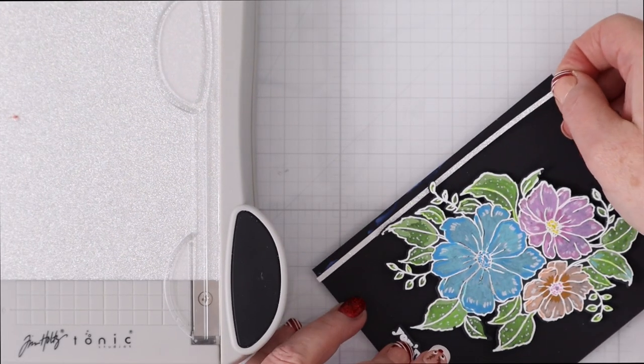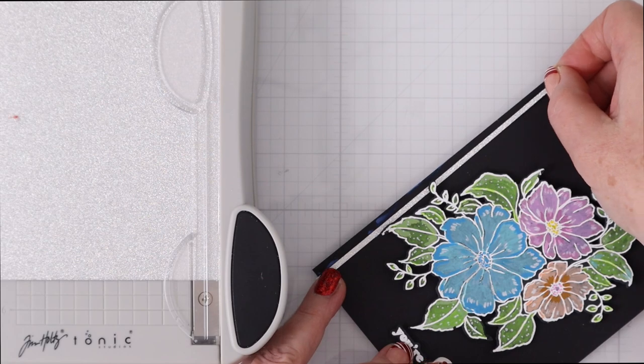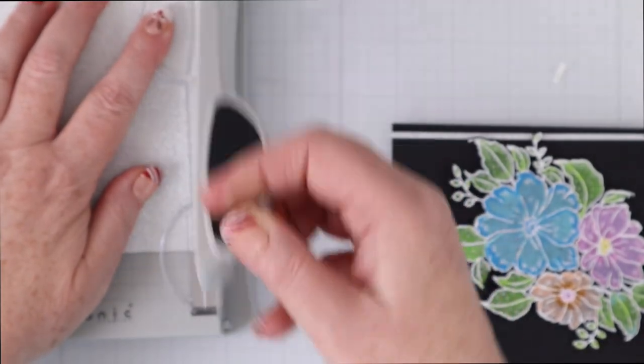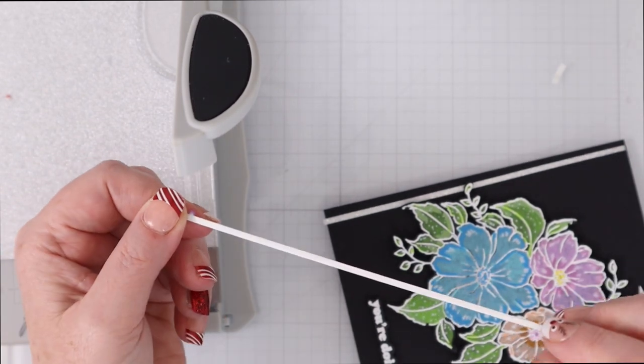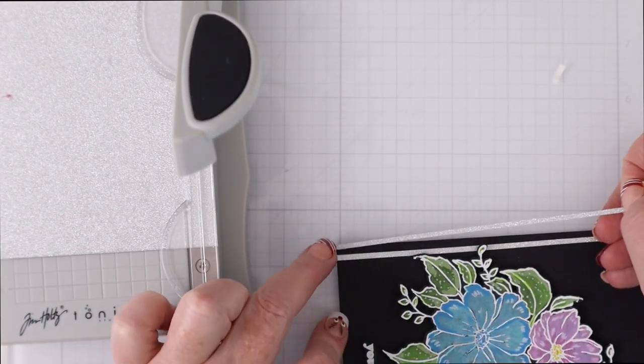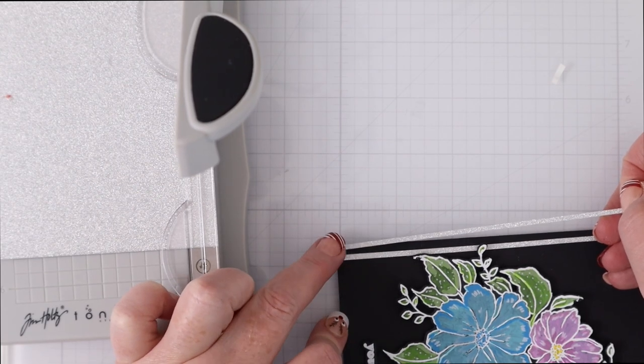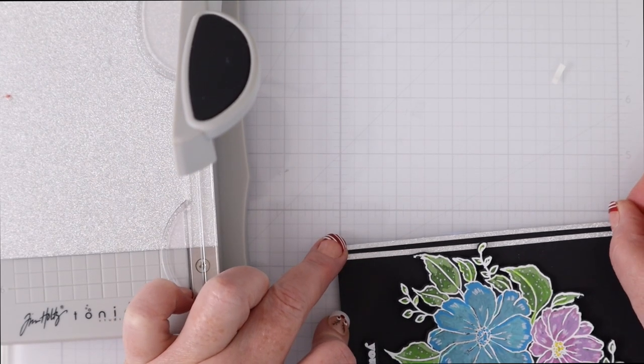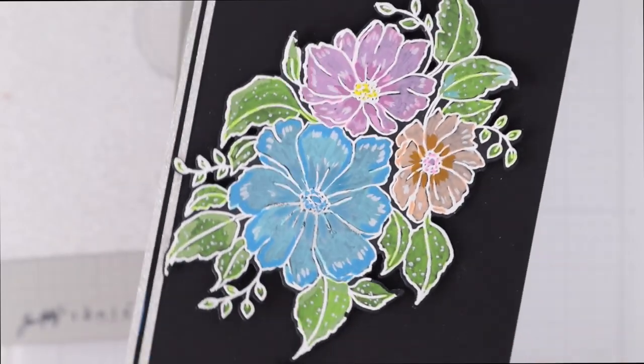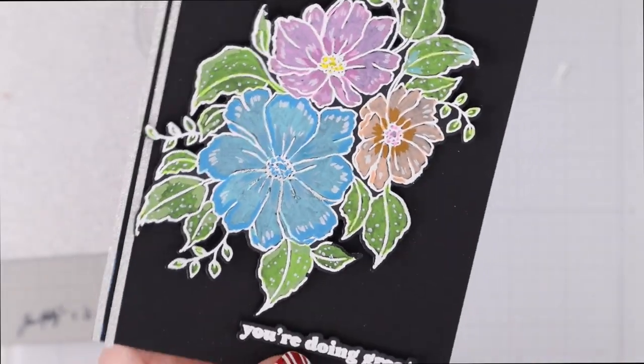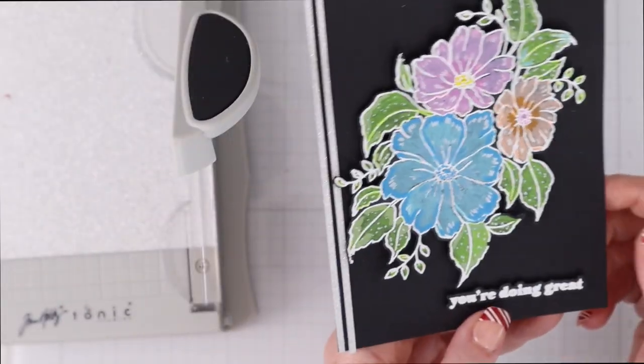I am also going to add just a couple little strips of silver glitter cardstock you can see this is a great way to use that mini trimmer from Tim Holtz it cuts some really fine thin strips of cardstock which adds just a nice little detail to the edge there just wanted it to have a little something special on the side to really make everything pop.